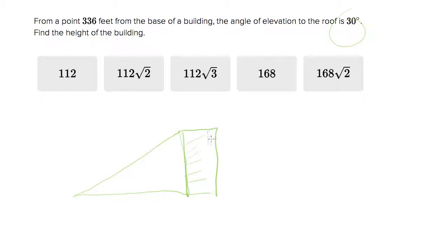And we know that the slope to the roof is 30 degrees, and we know that the length of the base is 336.